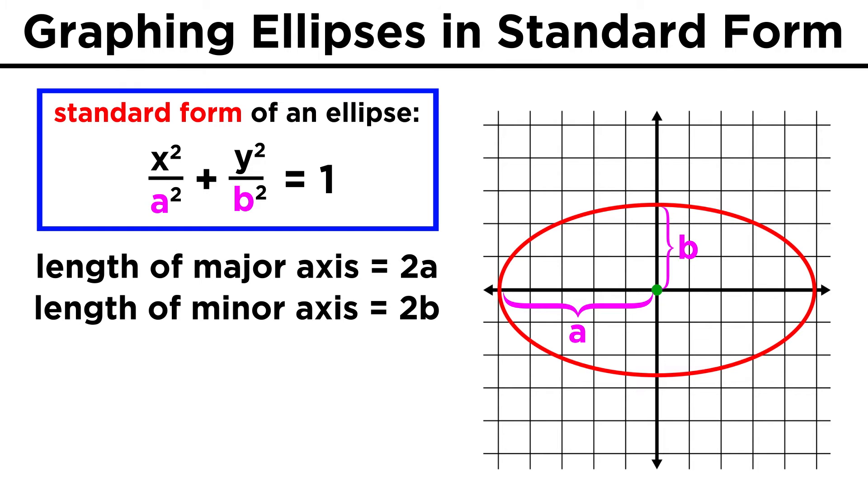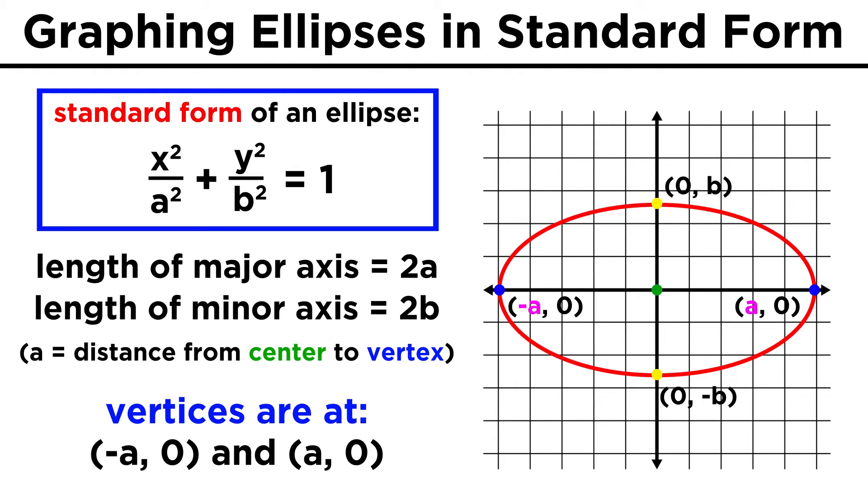Specifically, the major axis has a length of 2A, and the minor axis has a length of 2B, or we could think of A as the distance from the center to a vertex on the major axis, which means that positive and negative A are the X intercepts, and positive and negative B are the Y intercepts.